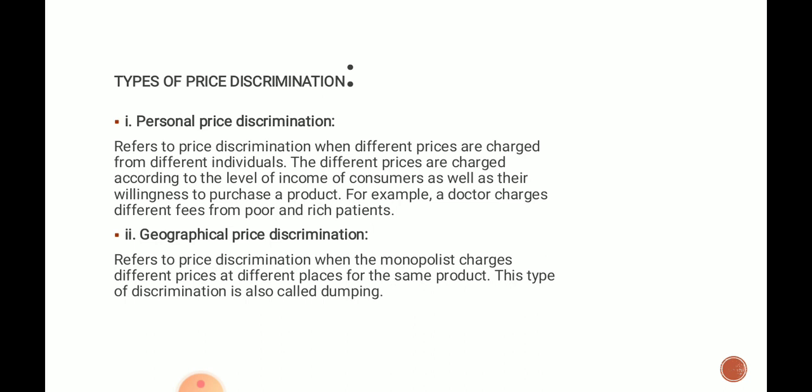For example, a doctor charges different fees for poor as well as rich patients. If the patient is very rich with a high income, the doctor may charge high prices for the medical facility. If the patient is very poor, the doctor may charge very little. That is called personal price discrimination.